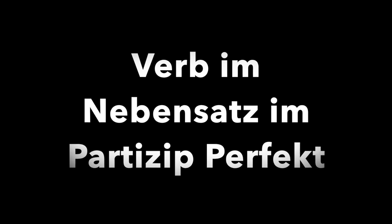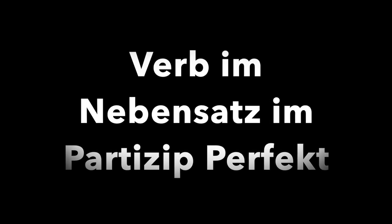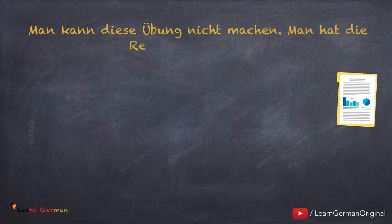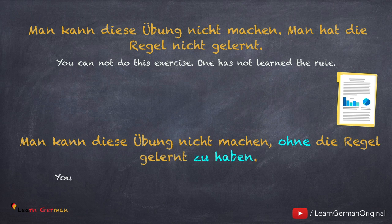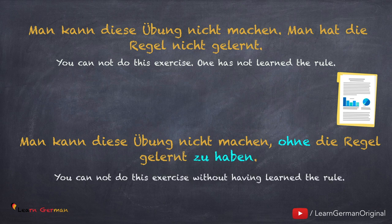Jetzt sehen wir, was passiert, wenn das Verb in dem Nebensatz im Partizip Perfekt steht. Hier ist ein Beispiel: Man kann diese Übung nicht machen, man hat die Regel nicht gelernt. Mit ohne zu sieht der Satz so aus: Man kann diese Übung nicht machen, ohne die Regel gelernt zu haben. Hier steht zu vor dem Hilfsverb im Infinitiv am Ende.